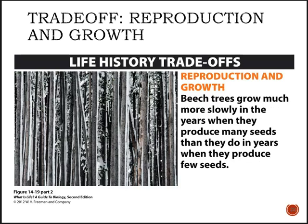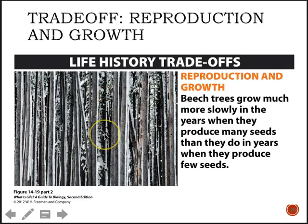The second trade-off is between reproduction and growth. Beech trees don't reproduce every single year — every two or three years they reproduce. If you cut down a beech tree and look at its growth rings, the years they reproduced show smaller rings, and the years they held off show bigger rings. Trees have a limited number of leaves and thus limited energy — they cannot reproduce and grow maximally at the same time. It is an evolutionary trade-off.